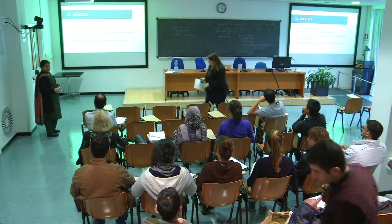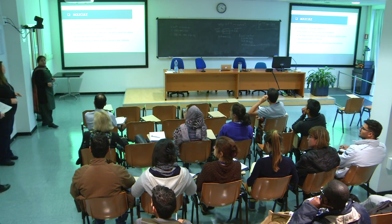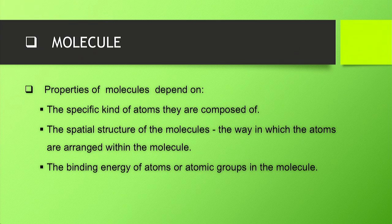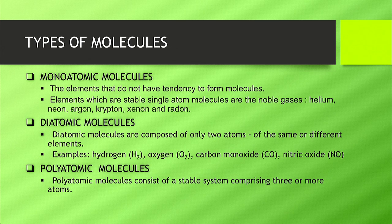Properties of molecules depend on the specific kinds of atoms they are composed of, their spatial structure and arrangement, and the binding energy of atoms or groups of atoms present in the molecule. There are different types of molecules. Monoatomic molecules are sometimes called simply monoatomic atoms — a single atom molecule. These are elements that don't have a tendency to form molecules. At standard temperature and pressure, stable single-atom molecules include the noble gases: helium, neon, argon, krypton, and xenon. At higher temperatures, all elements are in gas form.